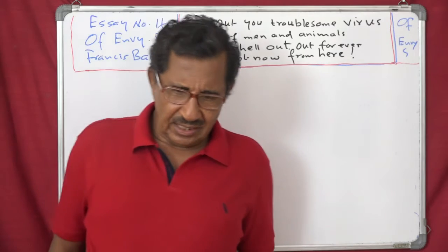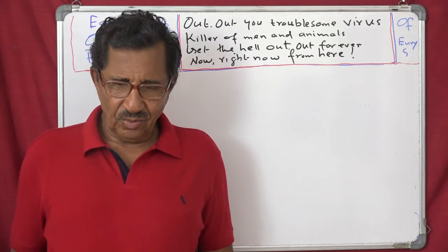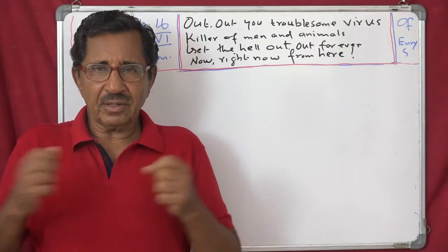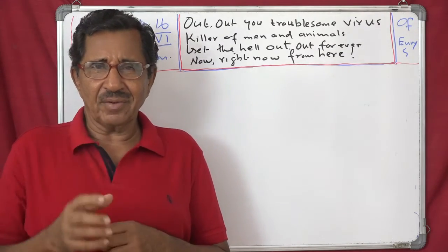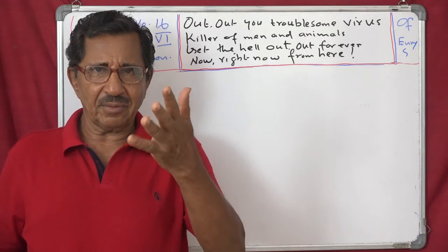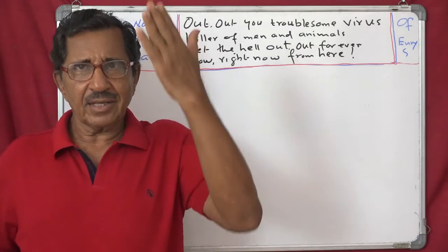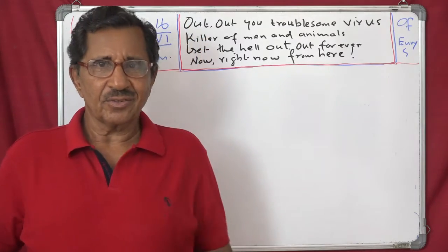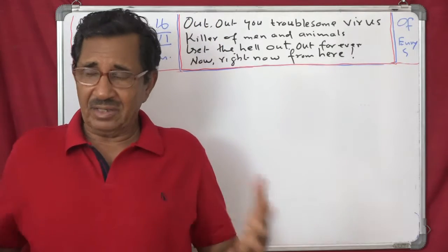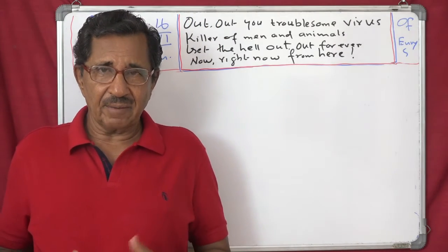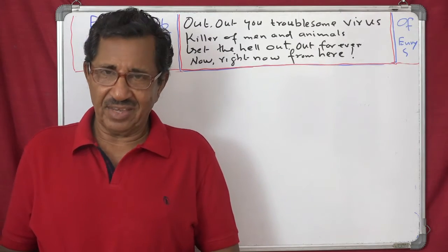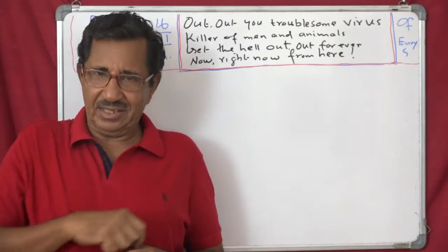And for the same reason, those that are advanced by degrees are less envied than those that are advanced suddenly and per saltum - per saltum means at a leap. There are two kinds of people. Some by hard work, step by step, they become great. People don't envy him because yesterday he was a beggar, then he is a businessman, and afterwards a member of a municipality, then becomes chairman, then a member of legislative assembly, then a minister, from there he goes up to become a governor. That is step by step.